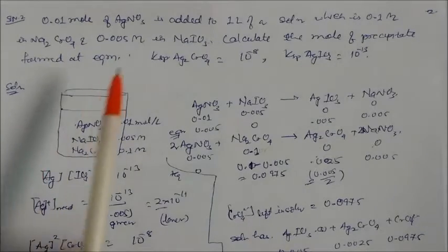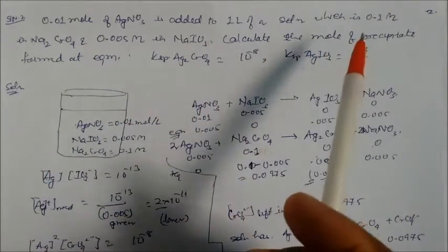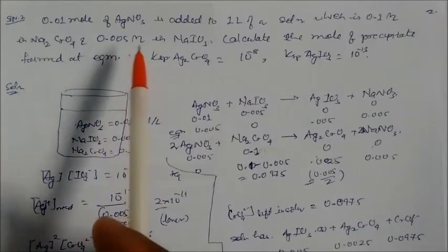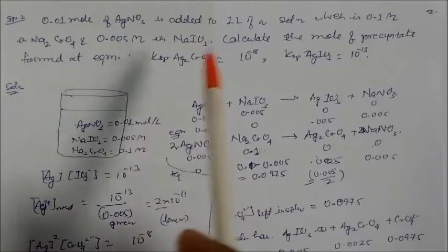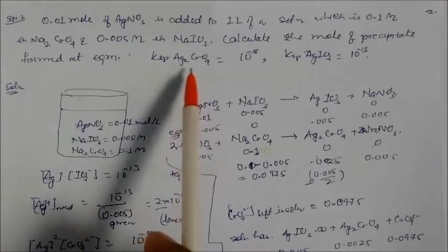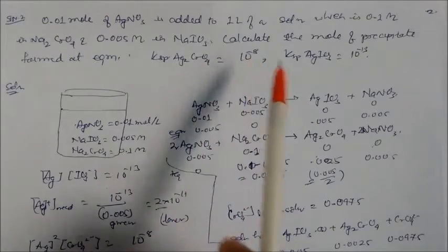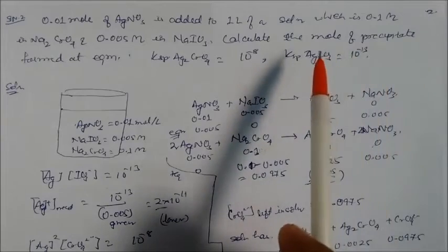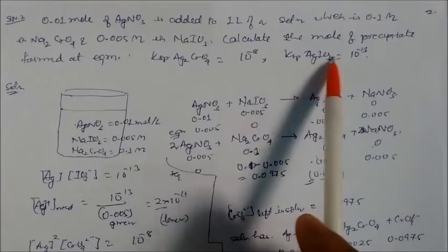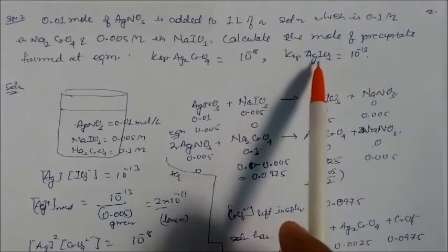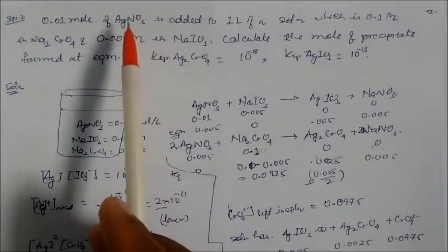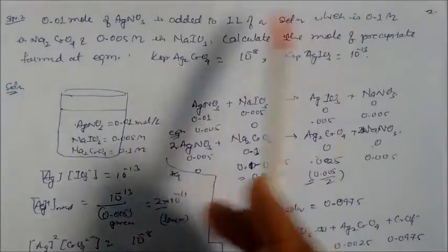Numerical Example 2: 0.01 moles of silver nitrate is added to one liter of a solution which is 0.1 molarity in sodium chromate and 0.005 molarity in sodium iodate. Calculate the moles of precipitate formed at equilibrium. The Ksp of silver chromate is 10⁻⁸ and the Ksp of silver iodate is 10⁻¹³. Since the Ksp of silver iodate is lesser, its solubility is lower.